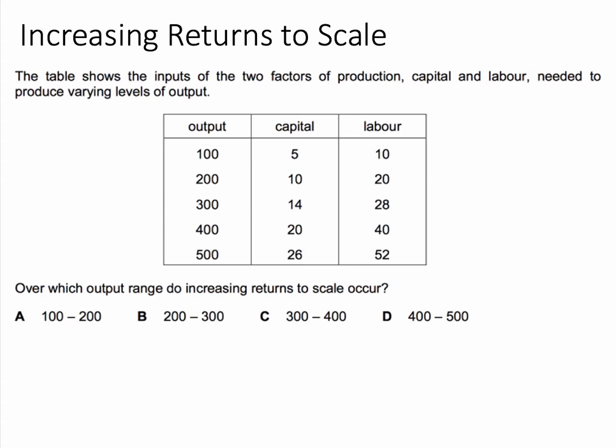The table below shows the inputs of two factors of production, labour and capital, needed to produce varying levels of output. The question is: over which range of output do increasing returns of scale occur? Have a go.